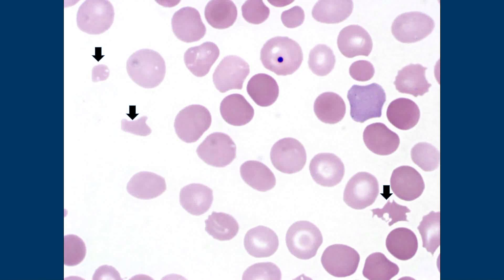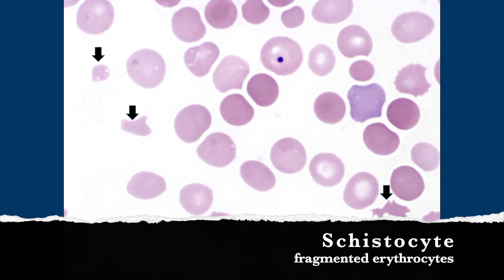Little blobs or fragments of red cells — what's the other name for fragment? Schistocyte, yes — schistocytes are the two fragments.